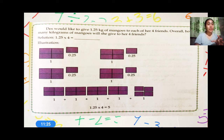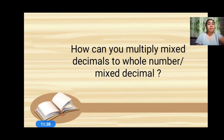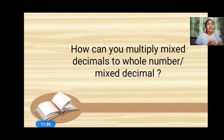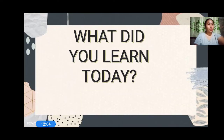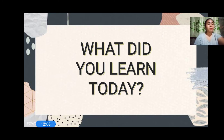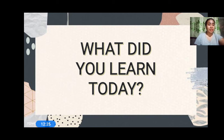First, we are going to remove the decimal. Then, we are going to multiply. And then, we are going to place the decimal in the answer. How can you multiply mixed decimals to a whole number or mixed decimals? First step: remove the decimal; then multiply; then place the decimal in the number. That is how we multiply mixed decimals to a whole number or mixed decimals.